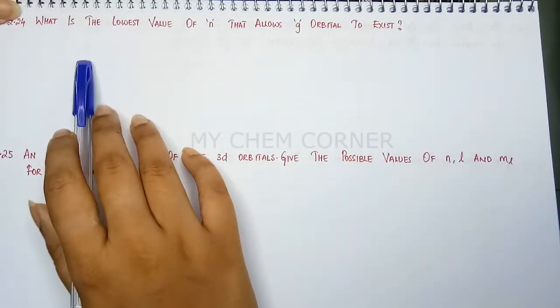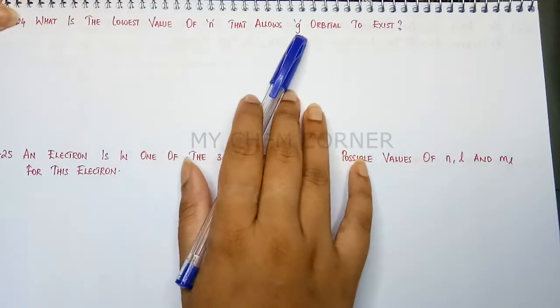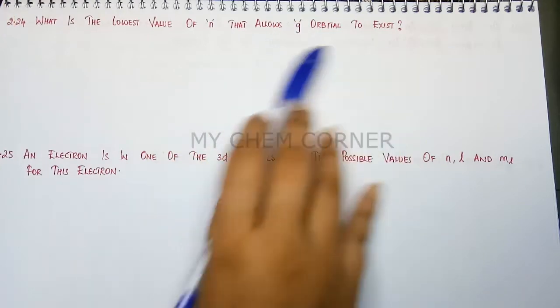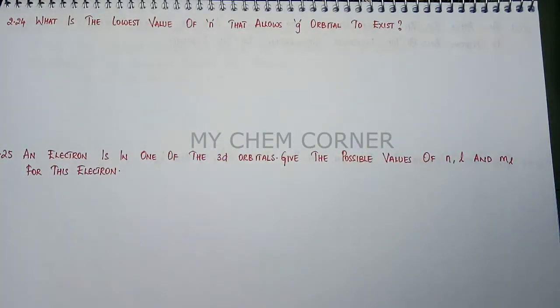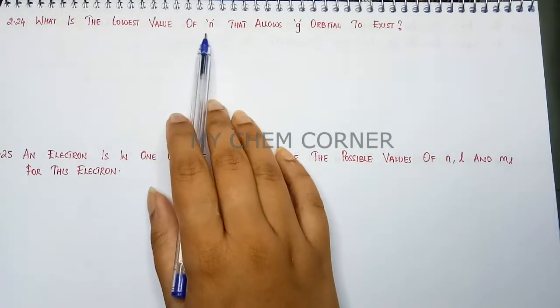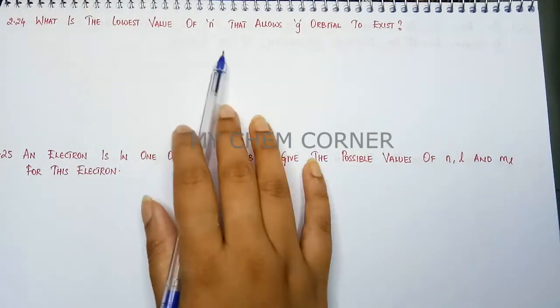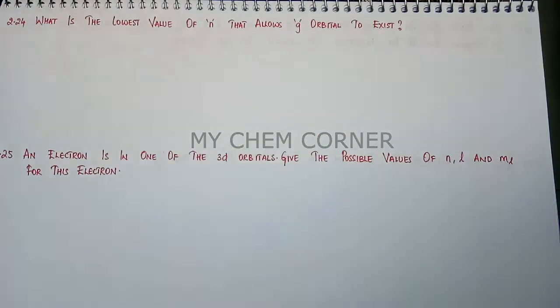Next question is what is the lowest value of n that allows the g orbital to exist? So we need to know when we have g orbital what is the lowest principal quantum number that you can have? For this we should know a table.